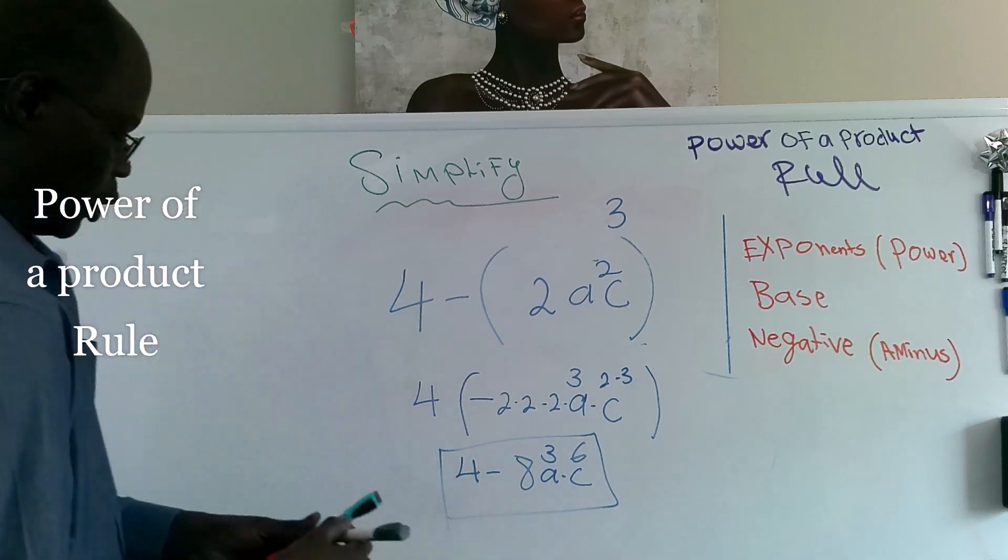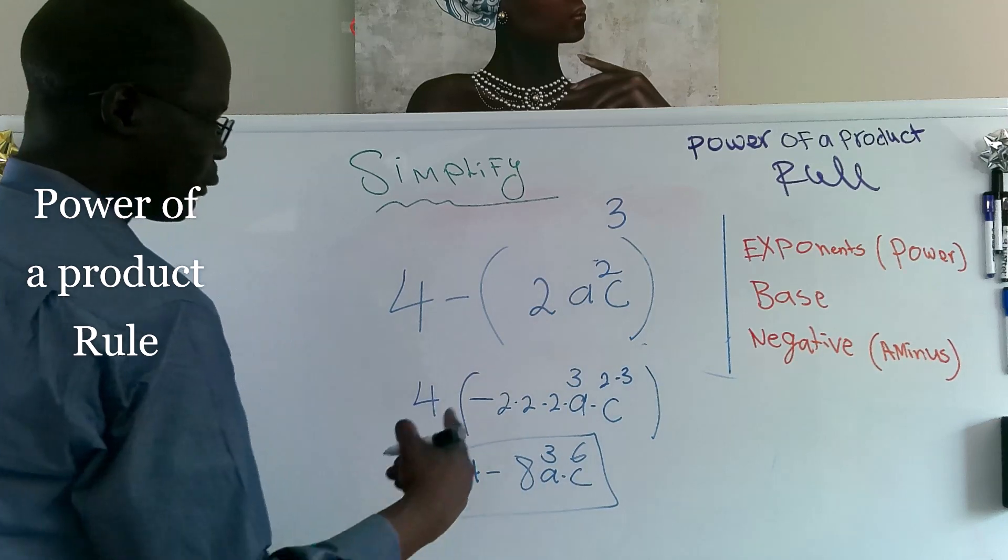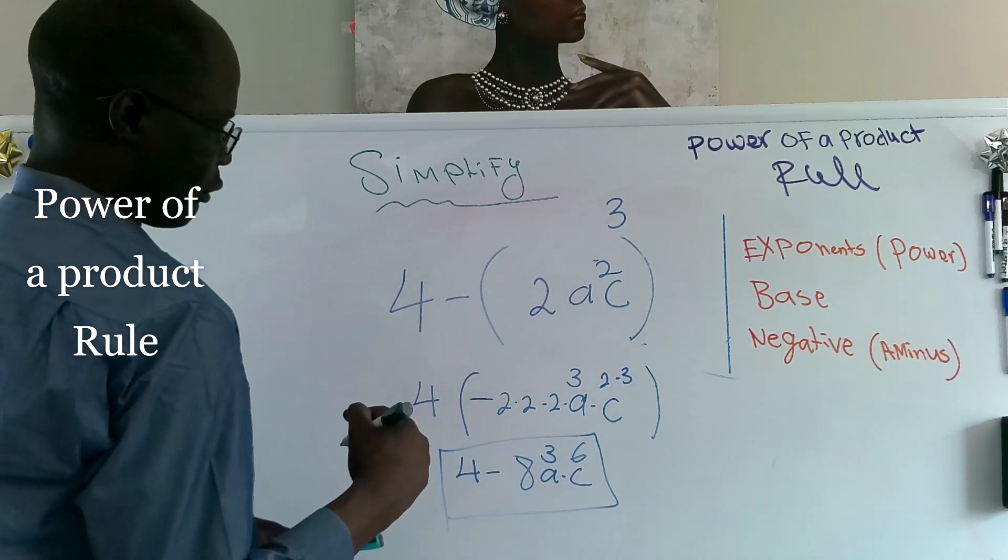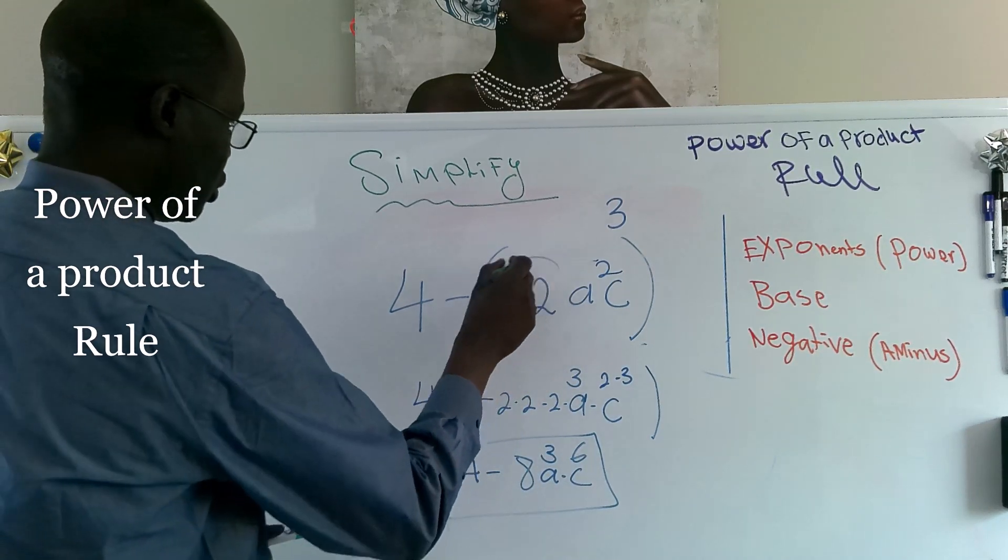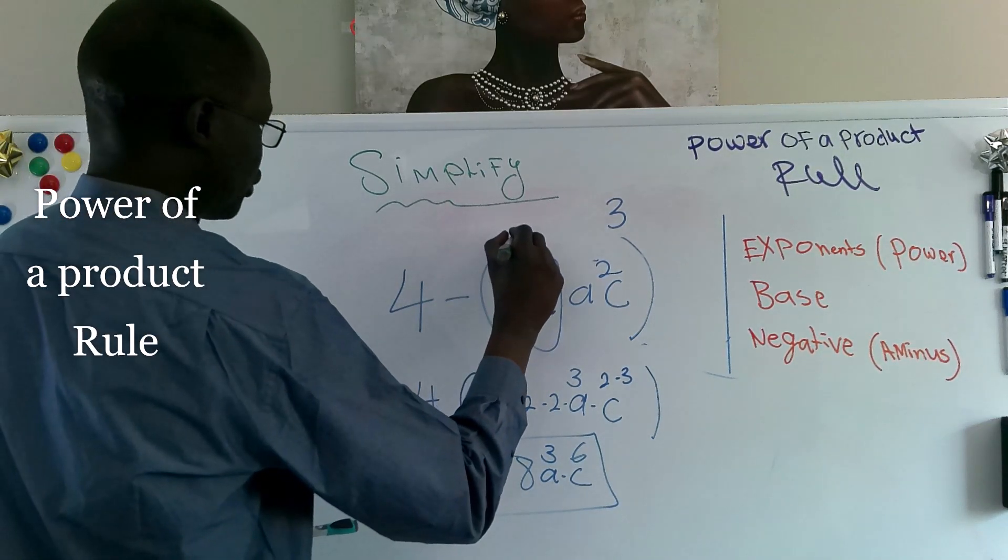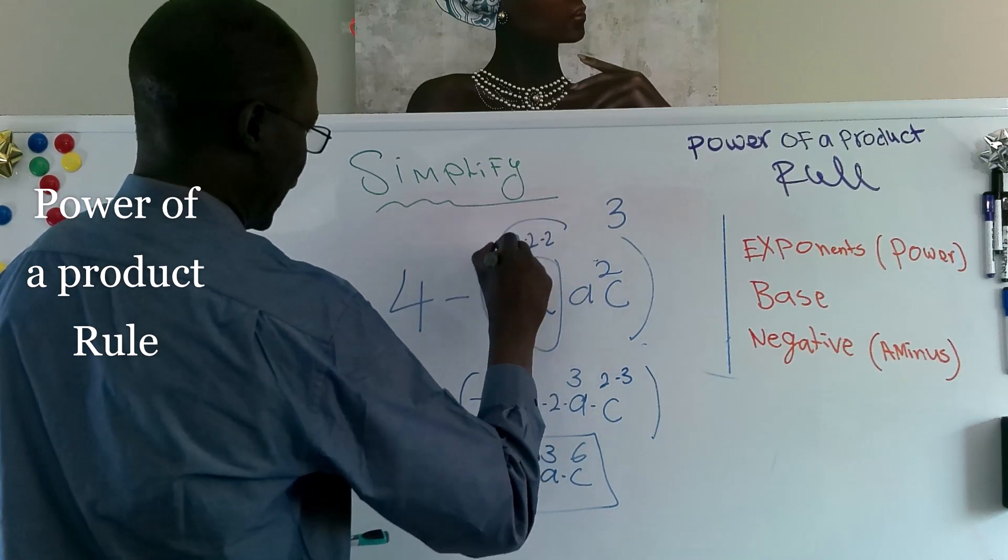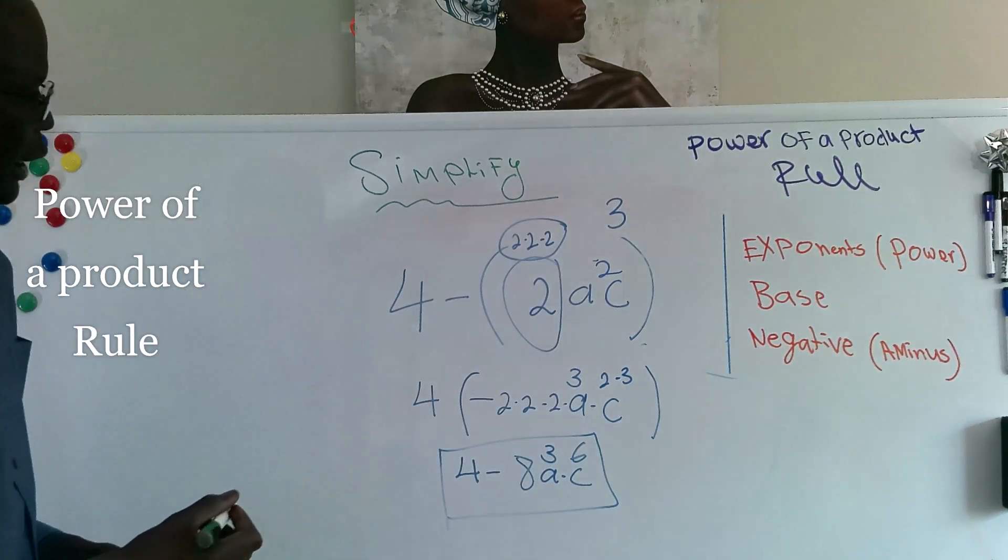Because we said, when you have exponent or you have a power, that means a number by itself. So 2 by itself 3 times, we have 2 times 2 times 2, 3 times. And that's how you get 8.